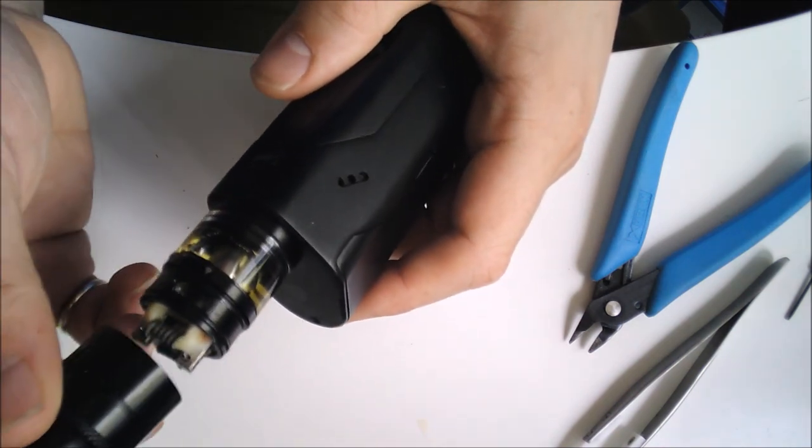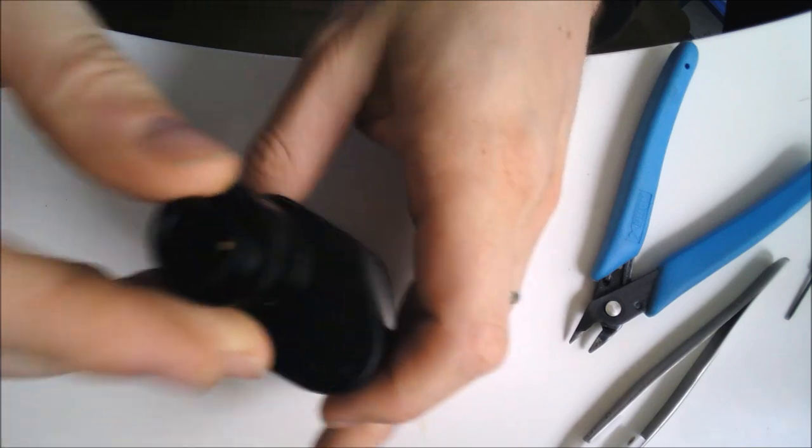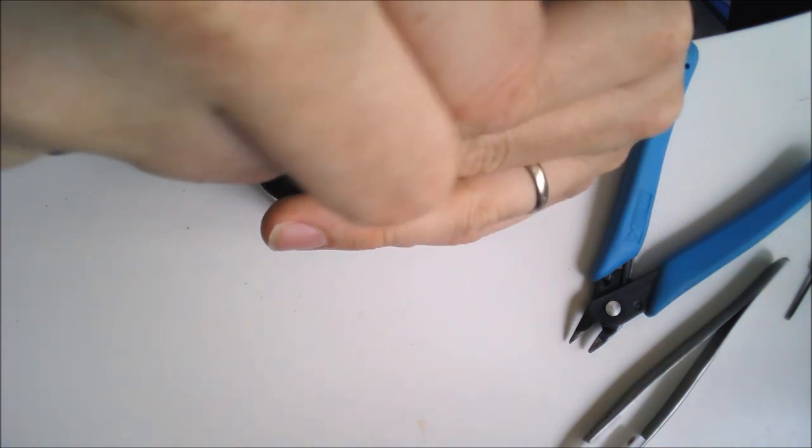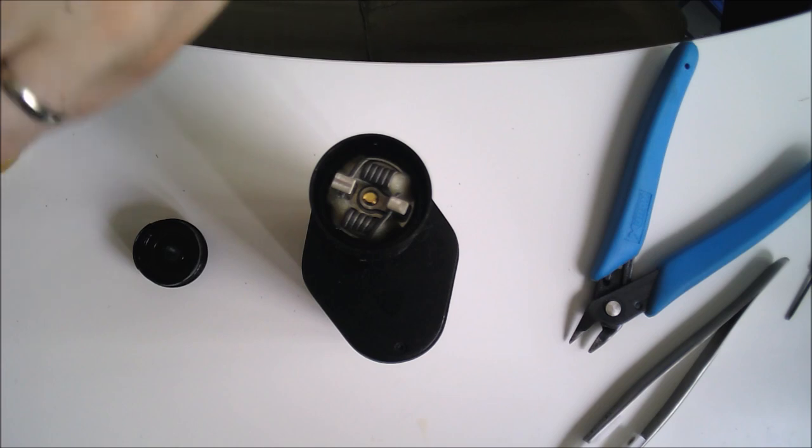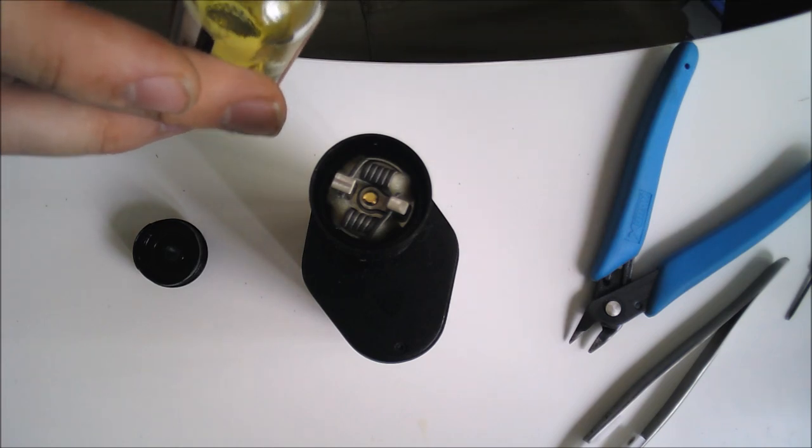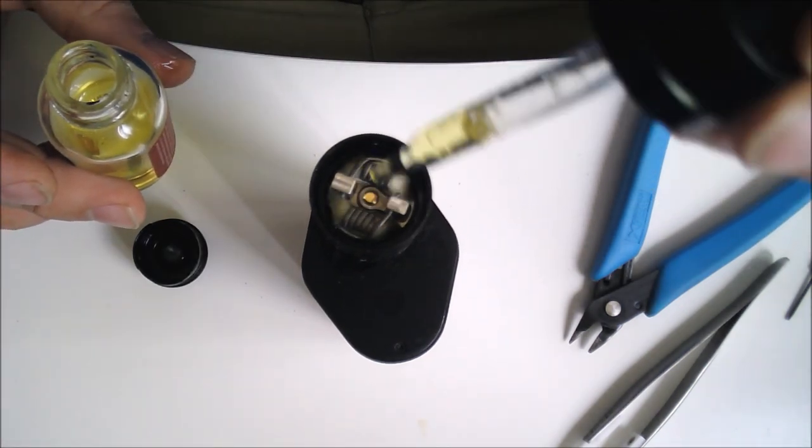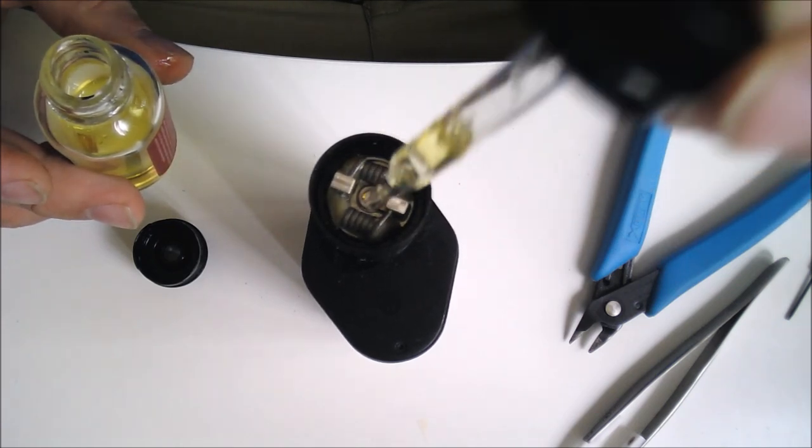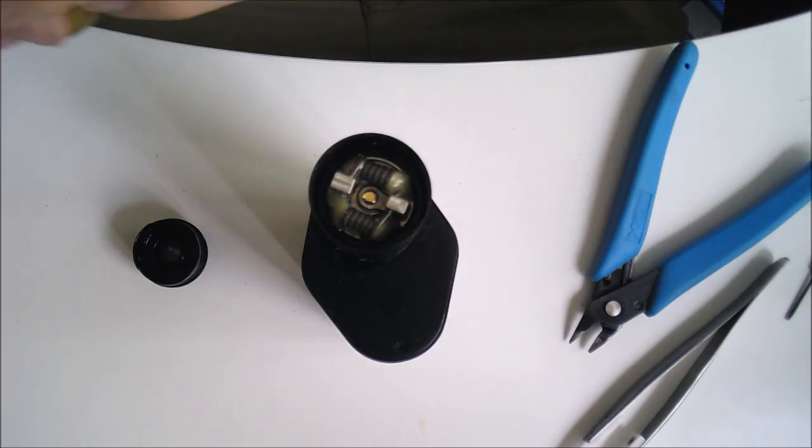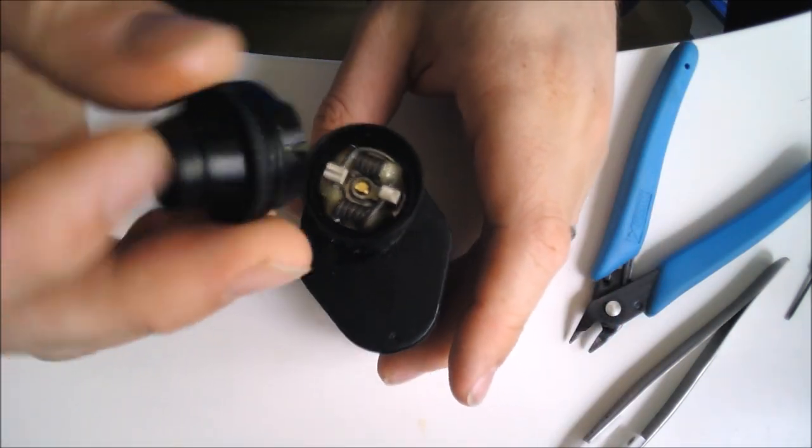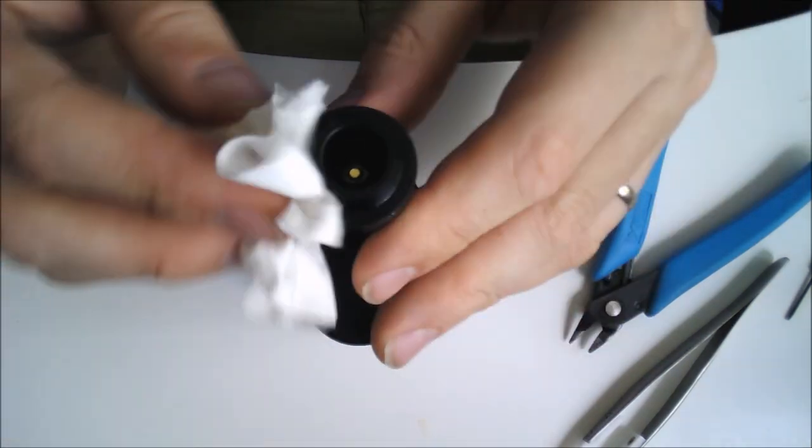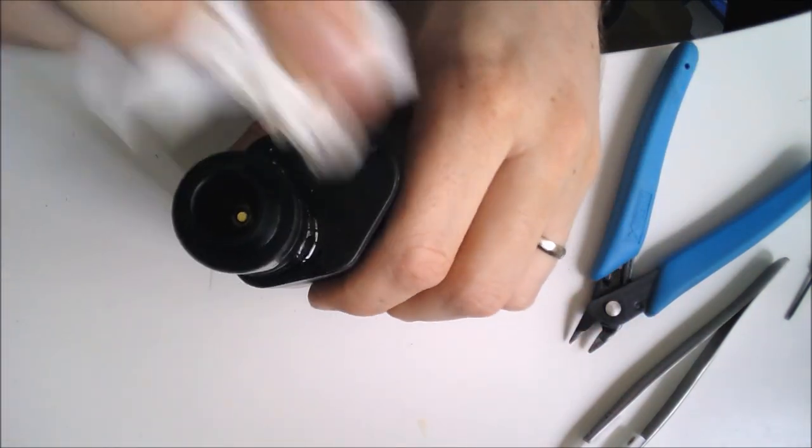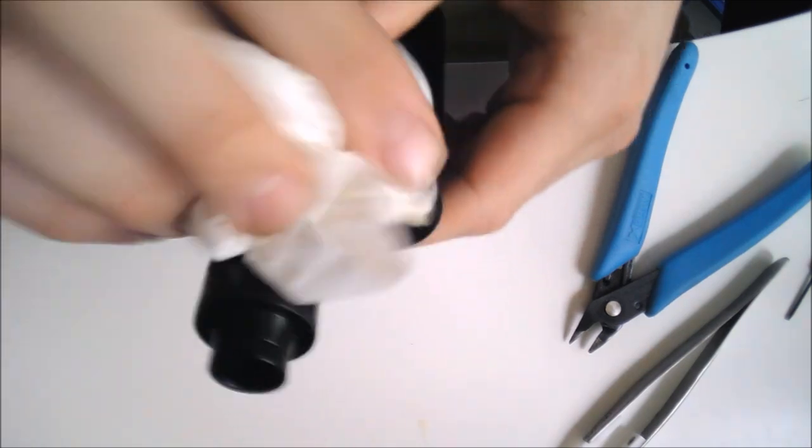So then we put our top cap on. Get your airflow lined up nicely. There we go. And then as a final part, just like to take the top off and just paint my coils so that we get the wicking started. Pop your top cap on, set up the airflow that we want, and give it a bit of a dust off. There we go.